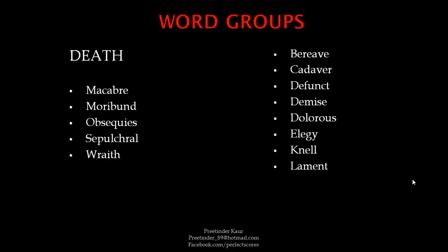The next word group is based on death. Words that surround death are macabre, moribund, obsequies, sepulchral, wraith, bereave, cadaver, defunct, demise, dolorous, elegy, wail, and lament. Lament is used for someone who is crying — lamenting is the act of crying — so you can use that in the same sense.